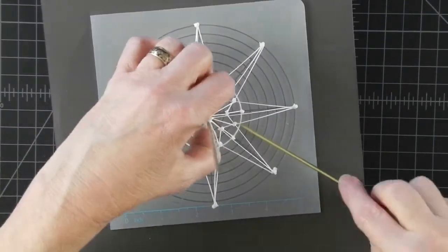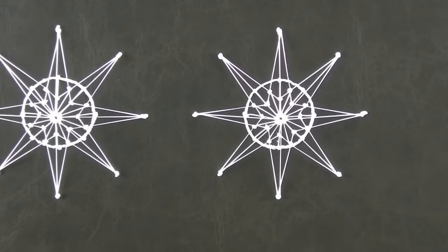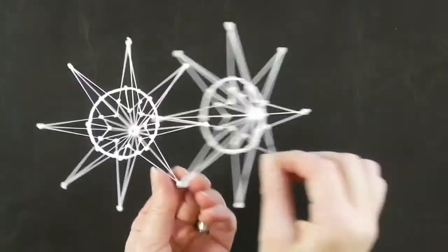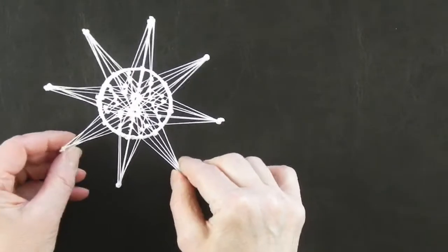Once you made two of these, you can connect them either as an 8-point star or offset the two halves to make a 16-point star, which is what I'm planning to do here.